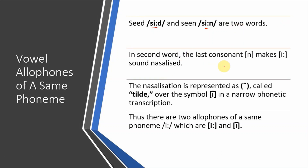But in the second word 'scene,' the last consonant is /n/, which is a nasal sound. This nasality sometimes affects the preceding vowel, making it nasalized. To show this nasalized version in narrow phonetic transcription, the nasalization is represented with a tilde over the symbol /e/. Thus, there are two allophones of the same phoneme /iː/ — the plain /iː/ and the nasalized /ẽ/.